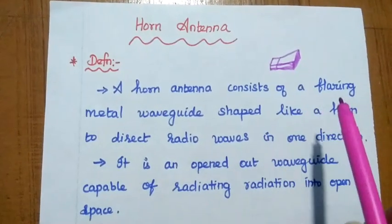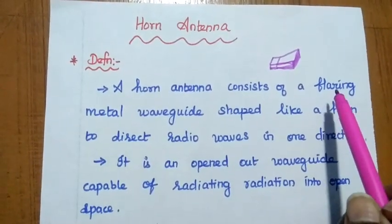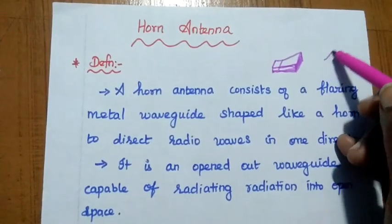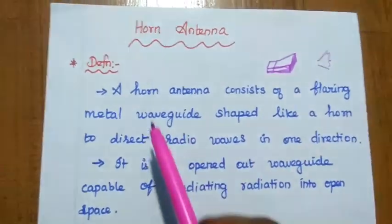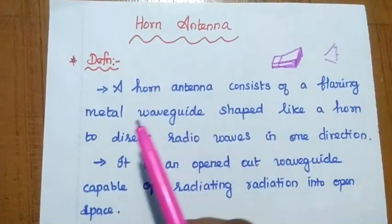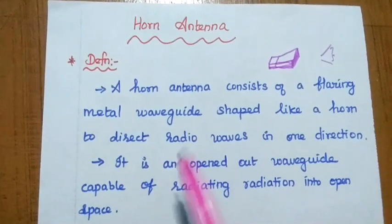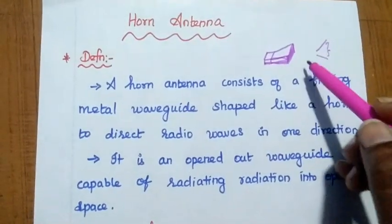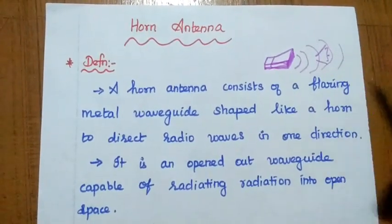Flaring is nothing but the opening — that wide opening is called flaring. Horn antenna consists of a flaring metal waveguide which is shaped like a horn to direct the radio waves in a particular direction.